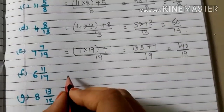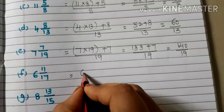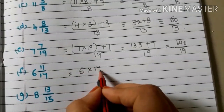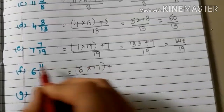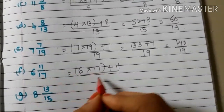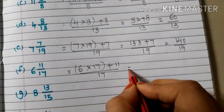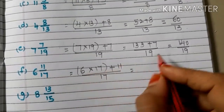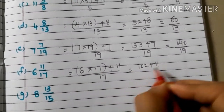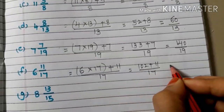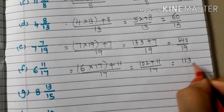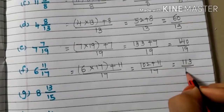F: 6 and 11/17. Whole number into denominator plus numerator, by denominator 17. 6 seventeens are 102, plus 11, by 17. 102 plus 11 is 113/17. So the answer is 113/17.